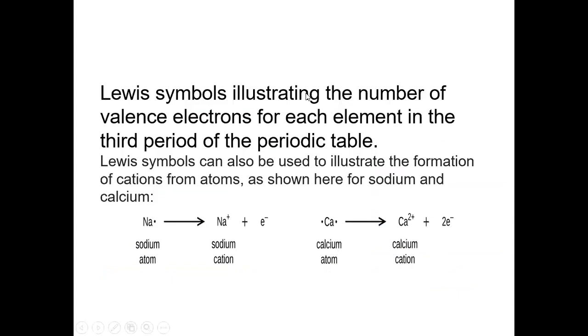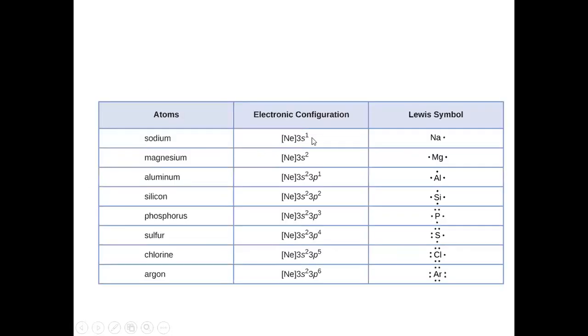Lewis Symbol is illustrating the number of valence electrons for each element in the third period of the periodic table. Lewis Symbols can also be used to illustrate the formation of cations from the atom.